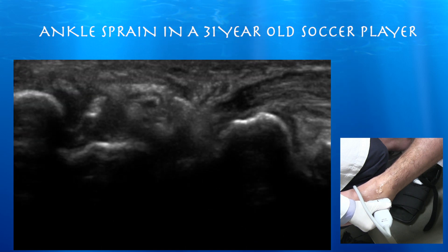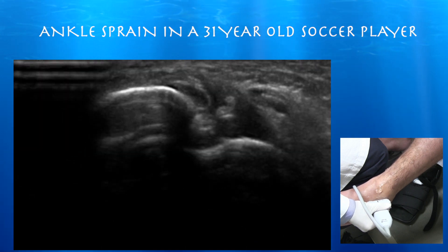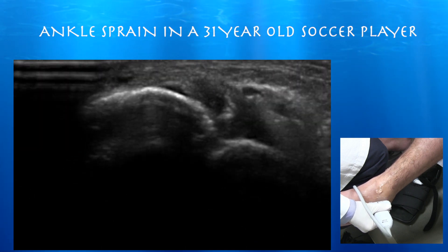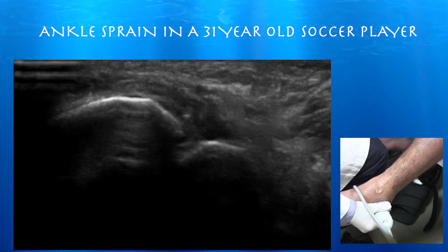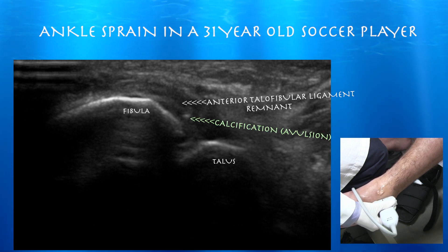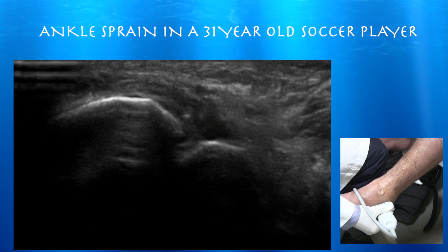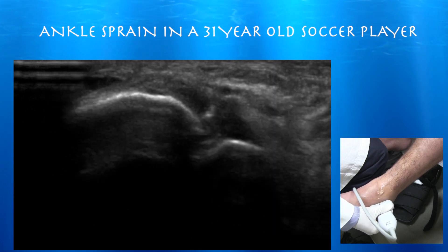Here's the ATFL — a really torn-up anterior talofibular ligament. There may be some remaining fibers here in the ATFL, but it is essentially completely torn. The ultrasound makes the avulsion quite apparent; however, on x-ray it was quite a subtle finding.